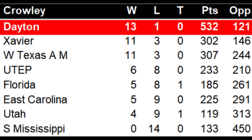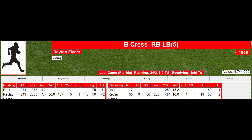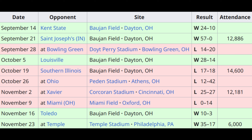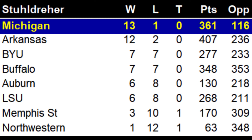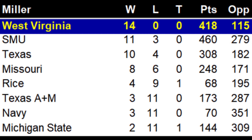Dayton surprised everybody by winning the Crowley division with a 13-1 record. Dayton was led by Bernie Kress — whose name is spelled wrong here, by the way — who racked up an amazing 7.4 yards per carry rushing to lead everybody. Pretty good for a small independent team that was only 5-5 in real life. Michigan won the Stuhldreuer league, winning 13 straight before losing to Arkansas in the final game. And West Virginia went undefeated in the Miller league, advancing to the promotion playoff game. Remember, this is not designed to be realistic — it's a game loosely based on real life that lets us speculate about what might have happened.